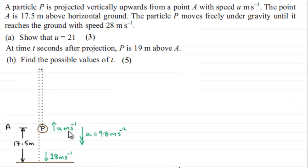But for this part anyway, let's just add to the diagram that we've got. So P is projected initially with a speed of 21 meters per second upwards from this point A, which is 17 and a half meters above the ground.